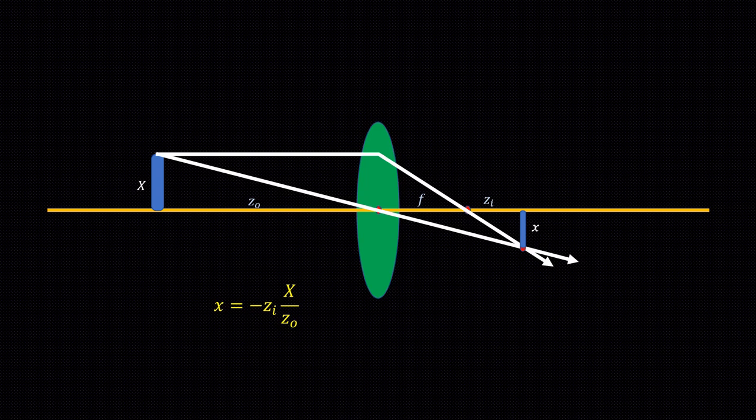If the camera sensor is placed at that point, we will get a sharp image. But if image plane is at a different position, we will get a blurry image. Usually the image plane is fixed. So we adjust the lens such that the image is sharp. This is called focusing.